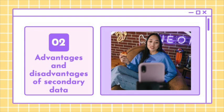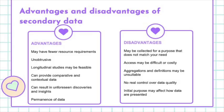Now we're going to look into the advantages and disadvantages of using secondary data. The advantages include fewer resource requirements — it saves resources, in particular your time and money, because the data is already there and you as a researcher don't need to collect it. Secondly, it's unobtrusive — the data has been collected and you don't have to disturb other people to get it. Since time is always a challenge, using secondary data will enable researchers to conduct longitudinal studies, referring to data already documented over a certain period of time.